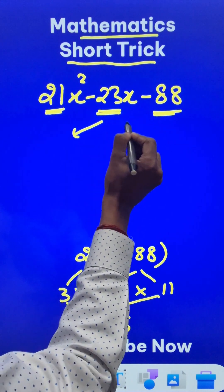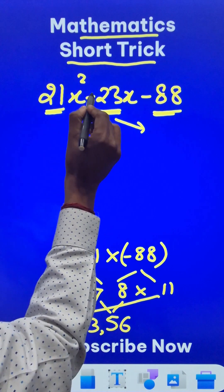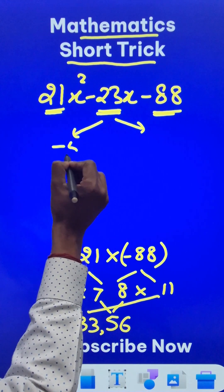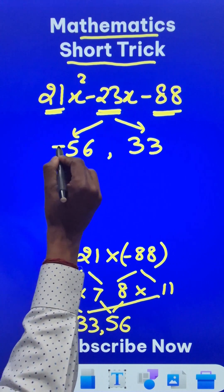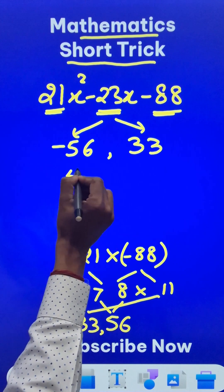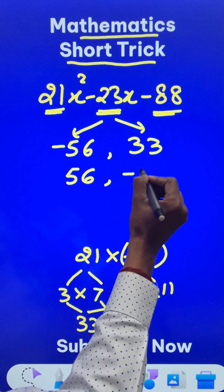So we have the middle term split factors which are, because this is negative, I'll take the bigger one as negative 56 and positive 33. And now let's change the sign. Negative 56 becomes 56 and 33 becomes negative 33.